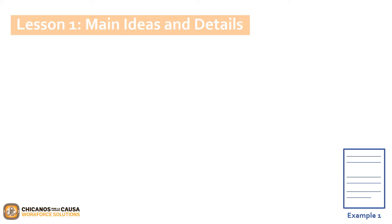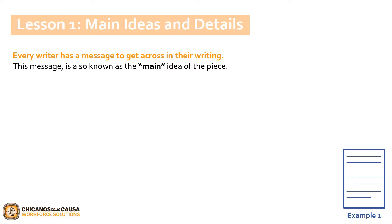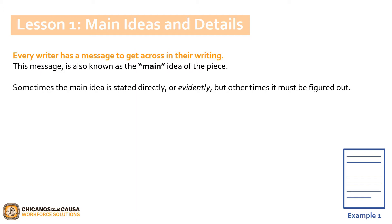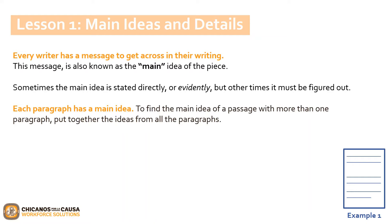Writers use a variety of different methods, techniques, and word tools to capture their audience's attention. Action words, descriptive imagery, and climactic storytelling are often utilized to drive the writing piece's central message. Every writer has a message to get across in their writing — this message is also known as the main idea of the piece. Sometimes the main idea is stated directly, but other times it must be figured out. Each paragraph has a main idea, and to find the main idea of a passage with more than one paragraph, it's important to put together the ideas from all paragraphs.